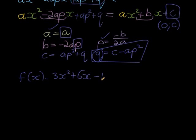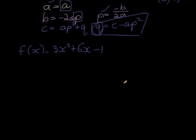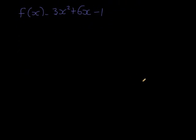Here we see a function, a quadratic function in the form ax squared plus bx plus c. And they want us to write it in the form f(x) is equal to a(x minus p) squared plus q.